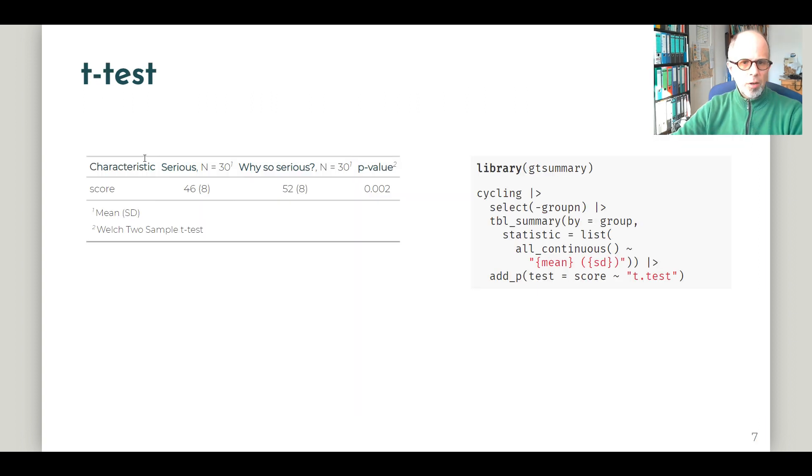So finally onto the t-test. We already saw the average values before. It's rounded here. So 46 for the serious group and 52 for the why so serious group. And according to the t-test, this group difference is statistically significant. So we can conclude that the why so serious group performs better. And this difference is statistically significant according to this test. And the p-value is 0.002. So it's well below the common threshold of 0.05. And we'll keep this value in mind, 0.002.